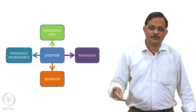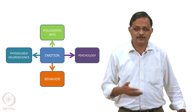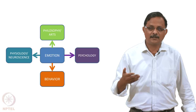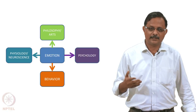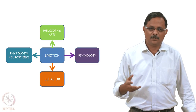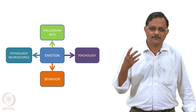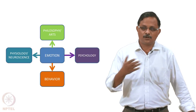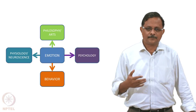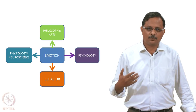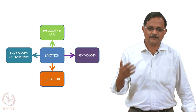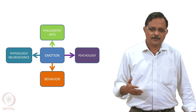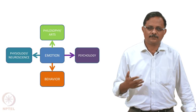Since this course is basically about neuroscience — not psychology, not philosophy — what are the neural or cerebral underpinnings of emotion? Exactly what happens in the brain when you are happy or sad? Which parts of the brain are active or participate in emotion? So a science of emotions can be approached from different points of view: philosophy and arts, psychology, behavior, and finally neuroscience. In this lecture we will talk about all four components of the science of emotion.